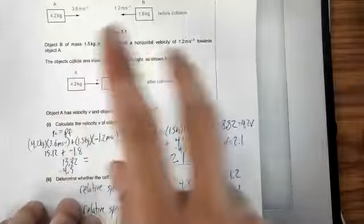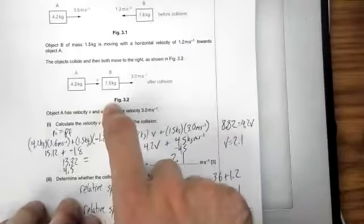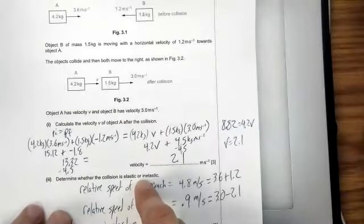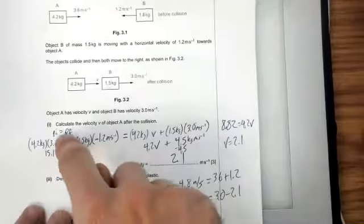I approach the calculation like this. I know that I'm using momentum conservation here. I can't really use the idea of relative speed of approach and separation because they haven't told me if this collision is perfectly elastic or not. And in fact, that's what we're going to have to determine with our final question here. But momentum is always conserved in every collision. So I'm going to use that.